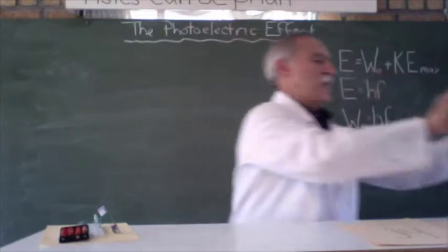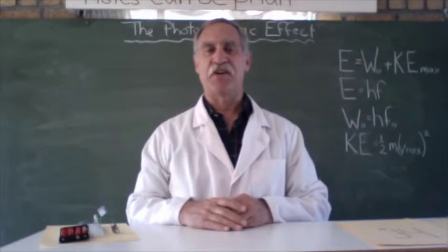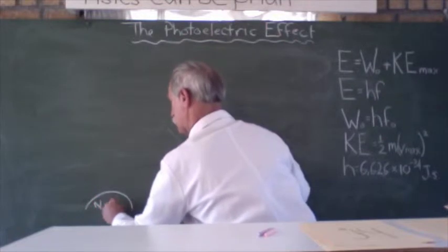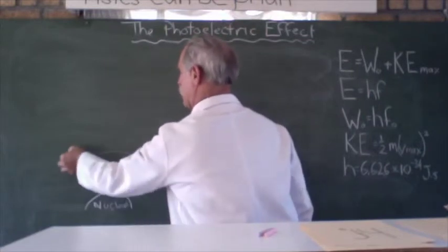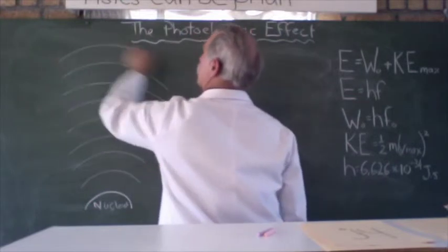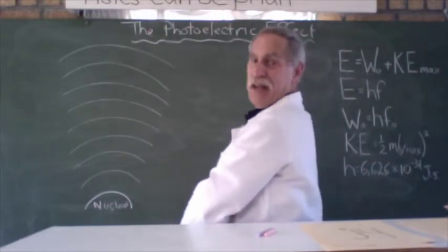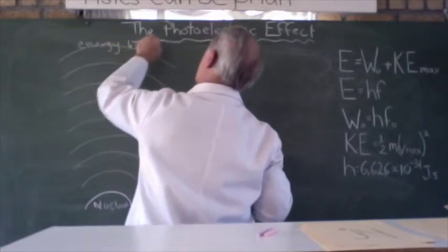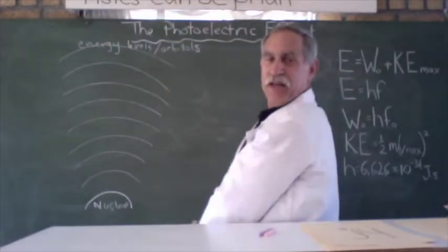In the photoelectric effect, the electrons are emitted into a vacuum. Let's start with the nucleus of an atom. You will remember that we have energy levels and orbitals. As we go further away from the atom, we have higher energy levels and orbitals — electrons with greater amounts of energy.